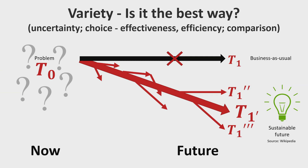Considering multiple futures serves several goals. First, the future is uncertain, so we don't know exactly what to expect, and considering multiple options is a more robust strategy. But it is also about decision making — we want to know whether the choices we make, the technologies that we support, the paths that we take, are the most effective and most efficient ones. And that's important for decision makers.